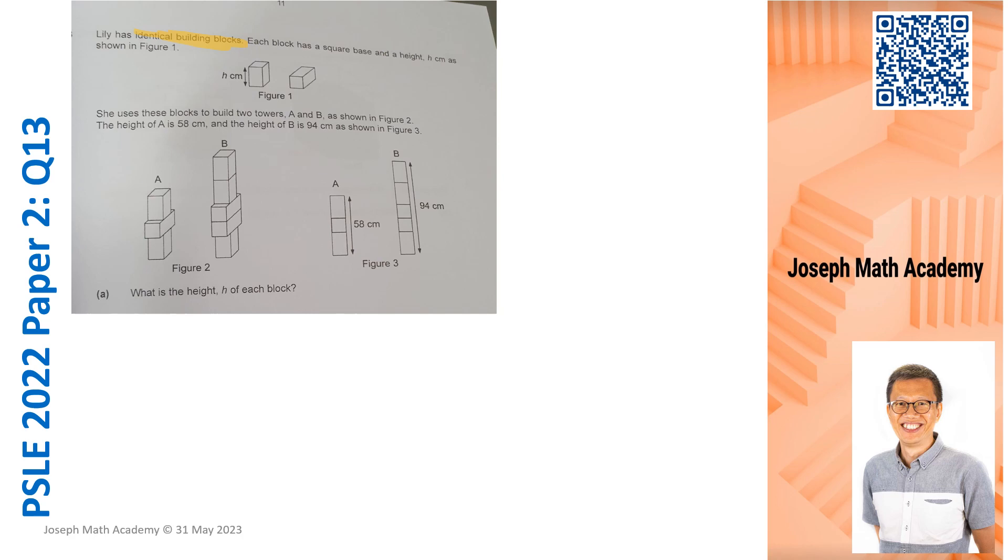Identical means each block used in Tower A and Tower B, they are exactly the same. That means it has the same length, breadth and height. Take note, the block has a square base. That means length and breadth, they are of the same length.